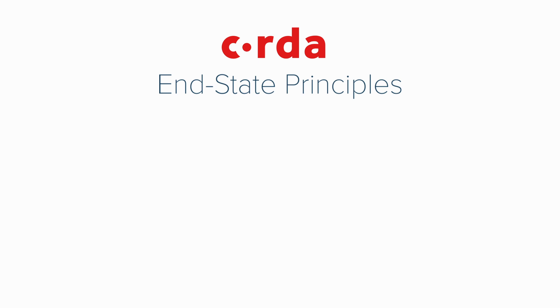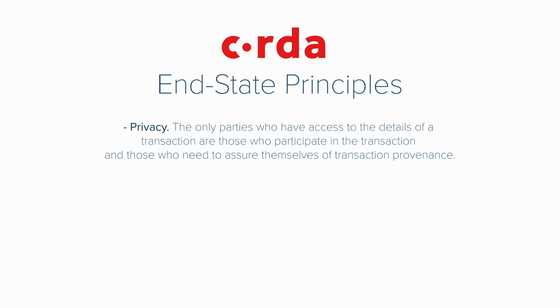Keeping in mind the fact that Corda aims to be the global distributed ledger, let's take a look at how they intend to make that vision a reality. These are some of Corda's end-state principles. Of course, privacy. The only parties who have access to the details of a transaction are those who participate in the transaction and those who need to assure themselves of transaction provenance. This means two or more participants can transact with one another, sharing only necessary information between them and not broadcasting the transaction or its details across the entire network like a public blockchain would, like Ethereum, which is of course not a feature that enterprises and businesses want.